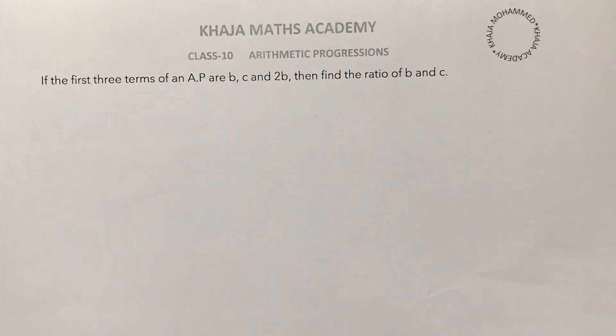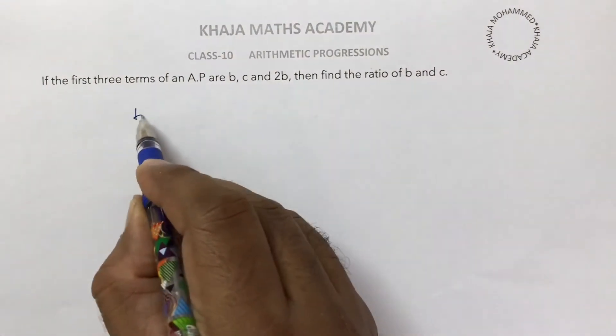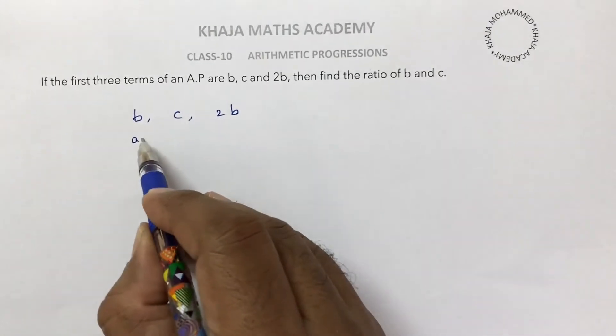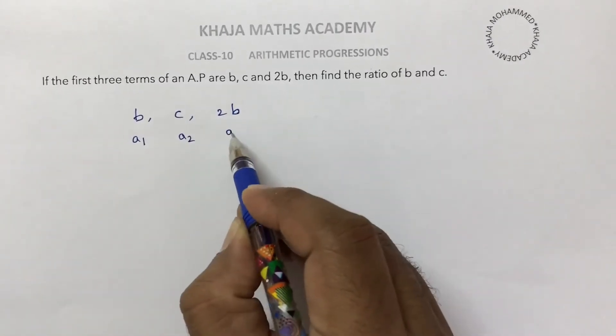If the first three terms of an AP are B, C, and 2B, then find the ratio of B and C. So here the three terms are B, C, 2B. You can consider these three terms as a1, a2, a3.